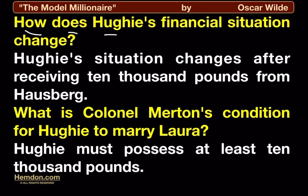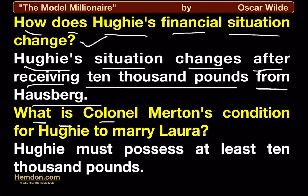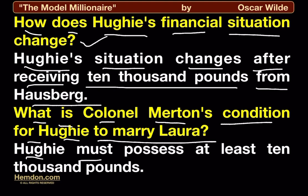How does Hugh's financial situation change? Hugh's situation changes after receiving 10,000 pounds from Hausberg. What is Colonel Merton's condition for Hugh to marry Laura? Hugh must possess at least 10,000 pounds.